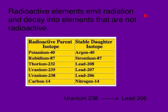Radioactive elements emit radiation and they decay into elements that are not radioactive. For instance, potassium-40 is a radioactive isotope, and it will decay and become argon-40, a stable daughter isotope. One of the most common ones that we use in dating rocks is uranium-238, which decays into lead-206.